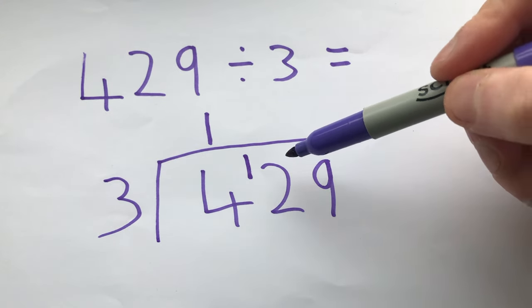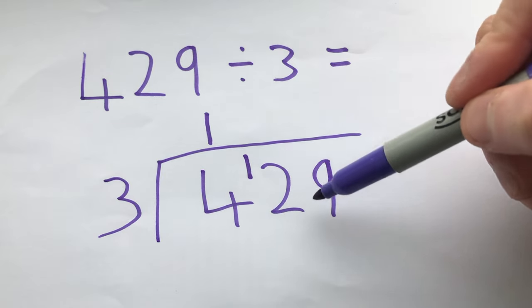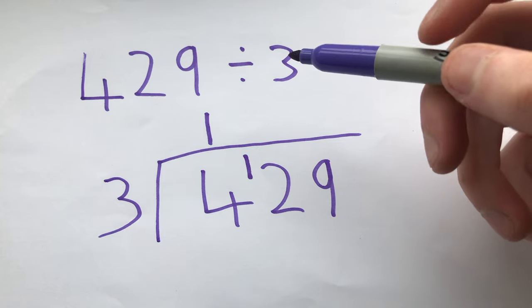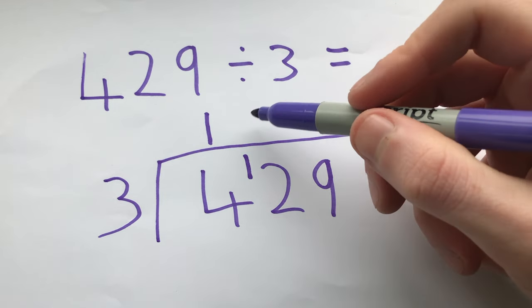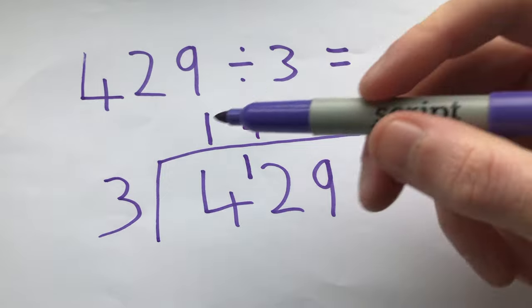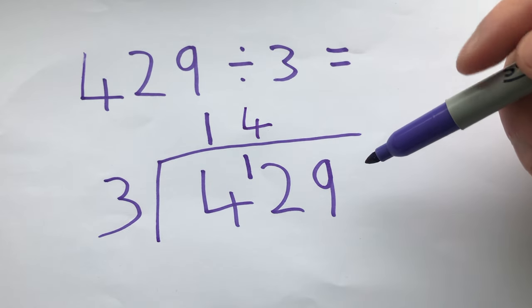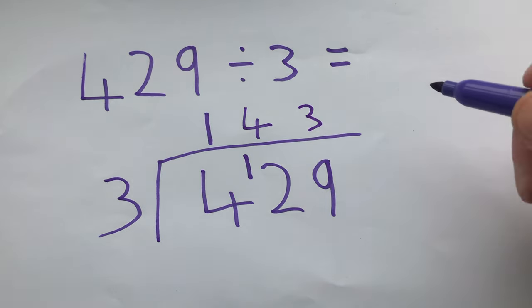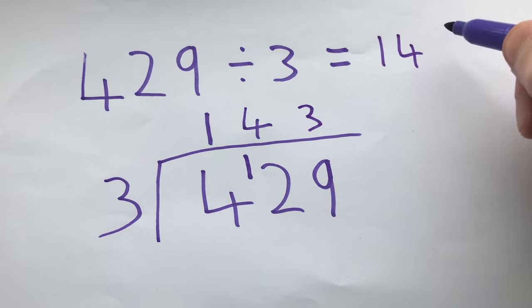So that one that we carried goes there and it goes in front to make a new number, so 12. How many threes go into 12? If you know your 3 times table, it's 3, 6, 9, 12, it's 4 times. And finally then, how many threes go into 9? And again we know that that is 3 so our answer is 143.